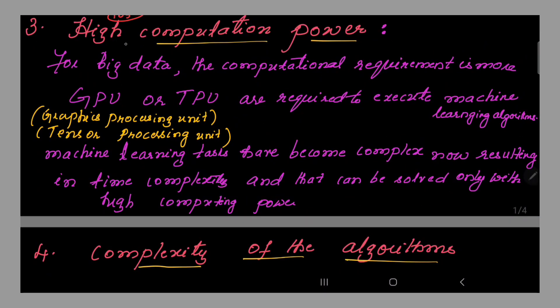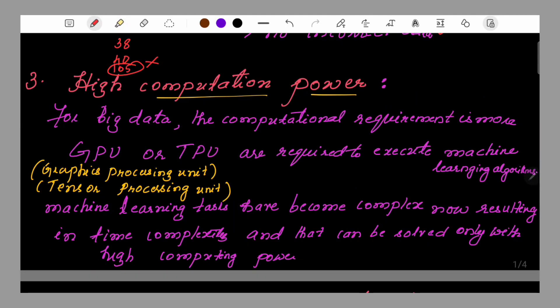The third challenge is high computation power. For big data, the computational requirement is more — just with CPUs, we will not be able to solve it. We require a graphics processing unit (GPU) and a denser processing unit (TPU) to execute machine learning algorithms. Machine learning tasks have become complex, resulting in time complexity that can be addressed with high computational power.